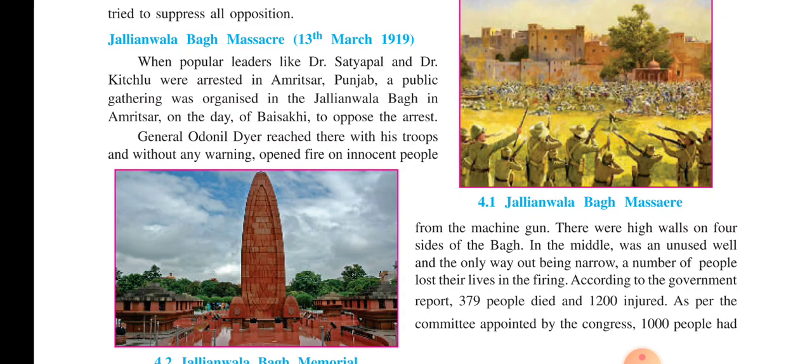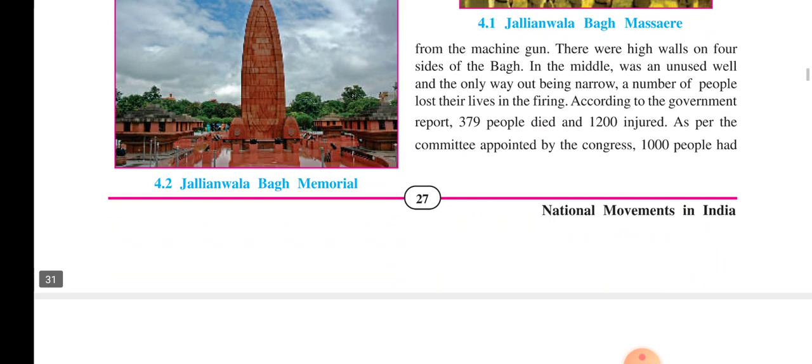Those who have gone to Amritsar and visited the Suvarana Mandir, the Golden Temple, very close to it only is Jallianwala Bagh. This place has only one opening — that also a very narrow opening — and there are high walls. These people were having a meeting and protesting in a very simple way without any problem. There were high walls on four sides, and in the middle was an unused well. The only way out being narrow, a number of people lost their lives in the firing. According to the government's report, 379 people died and 1200 were injured. As per the committee appointed by the Congress, 1000 people had died in the firing.